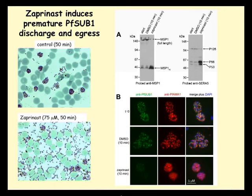We went on to confirm that Zaprinast induces egress in a cyclic GMP-dependent manner, as its effects on wild-type parasites are prevented by compound 1 and compound 2, whereas Zaprinast-induced egress of the T618Q gatekeeper parasite mutant are not affected by the PKG inhibitors. Zaprinast also induces rapid release of SUB1 from exonemes and discharge from micronemes.